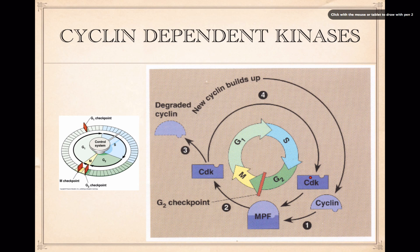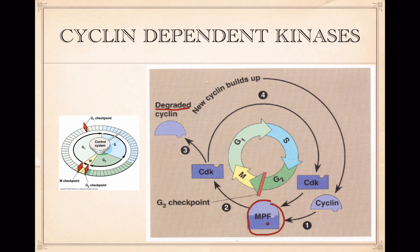Looking at the diagram: we have a cyclin and a cyclin-dependent kinase (CDK). If cyclin is available, they combine to form the active MPF. When there's enough MPF in the cell, the cell goes through mitosis and starts to divide. But as the cell goes through mitosis, the cyclin is separated from the CDK in a process called degradation. With mitosis complete, there's no more MPF, so the cell must wait until it builds up more cyclins to combine with the CDKs to make more MPF. The presence of cyclin is what regulates the cell cycle.